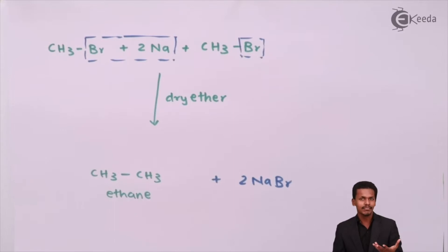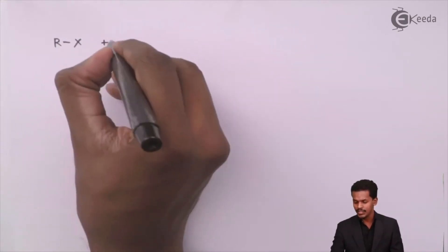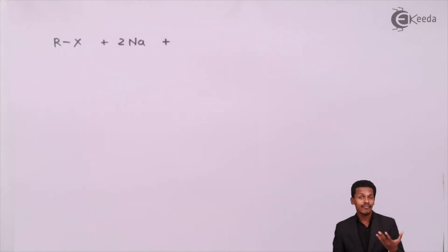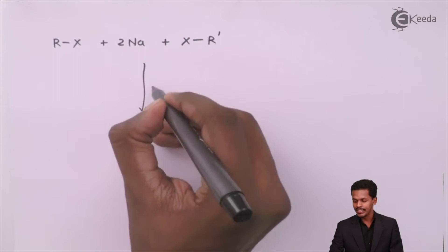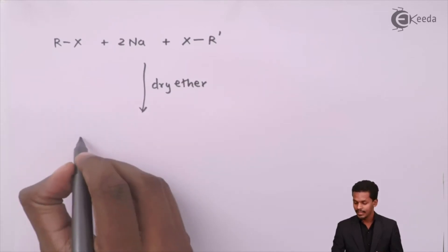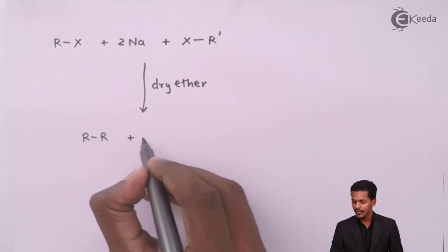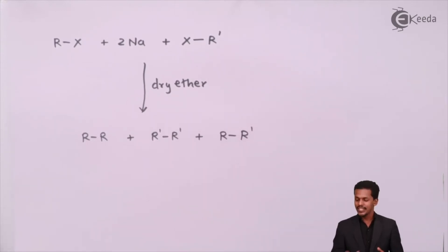Now, what happens if both alkyl halides are different and they are reacted with sodium in the presence of dry ether? Suppose we use R–X and R'–X with sodium in dry ether. In this case, a mixture of products is obtained — we could get R–R, R'–R', or R–R' as the coupled alkane products.